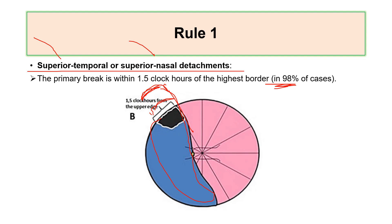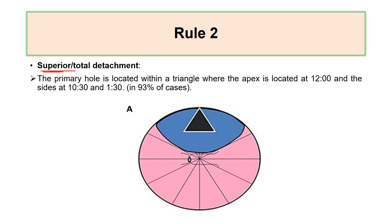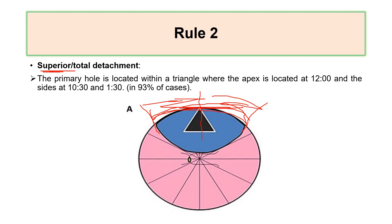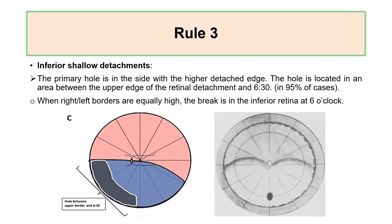Rule number two: if you see a superior detachment or total detachment — both shapes are treated similarly — in 93% of cases the break will be at 12 o'clock or within a triangle defined by one-and-a-half clock hours nasally and one-and-a-half clock hours temporally from 12 o'clock, meaning the break will be between 10:30 and 1:30.